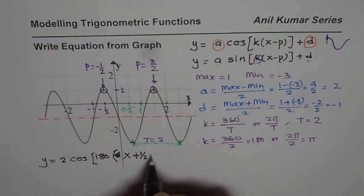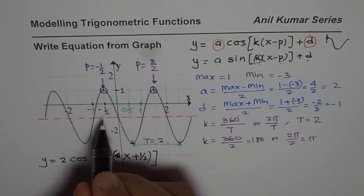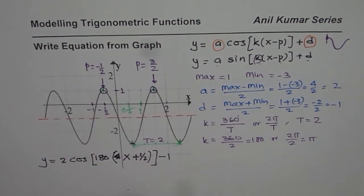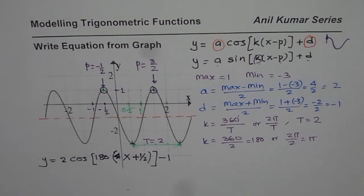Do you get the idea? And then the axis which is at minus 1, so we get minus 1. So we could write the cosine function like this.